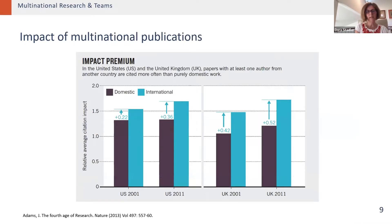There is an impact premium with publications — authors representing multiple countries have a higher impact factor. This is shown for both U.K. and U.S. research publications comparing 2001 and ten years later.